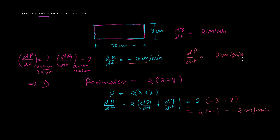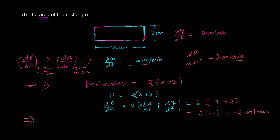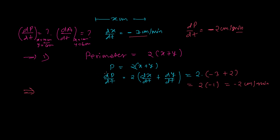In every 1 minute, the perimeter is decreasing by 2 cm. Minus represents decrease — when you get a negative rate, the quantity is decreasing. Now for the second part, we need to find the rate of change of area.